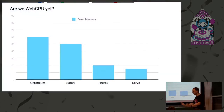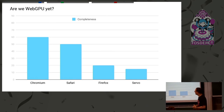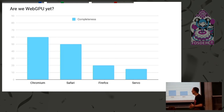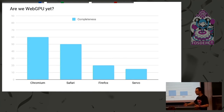This is a subjective measure of completeness between browsers. Chromium is fairly good — they have a large team and a lot of API surface implemented. We just got compute working; you can go to Nightly, enable WebGPU in prefs, and run the compute example. We will work on presentation and rendering next. Servo is also catching up — for Servo it's fairly simple because it's pure Rust, without as many language boundaries, and it's using the same infrastructure: WGPU.